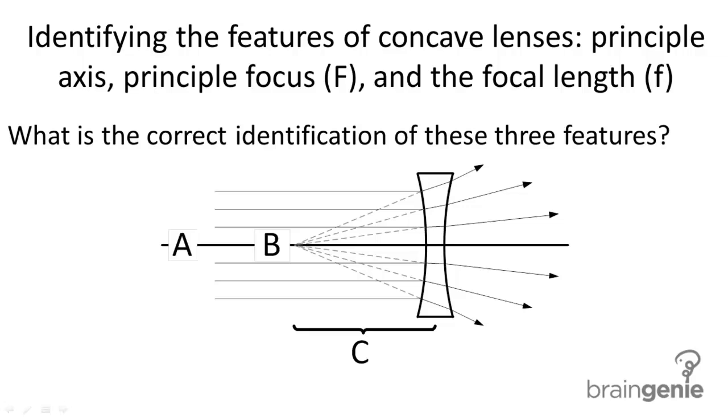Identifying the features of concave lenses: principal axis, principal focus, and the focal length. What is the correct identification of these three features, A, B, and C?